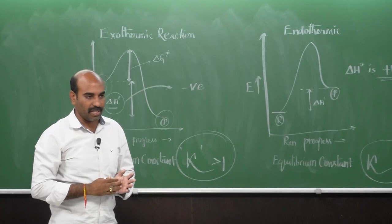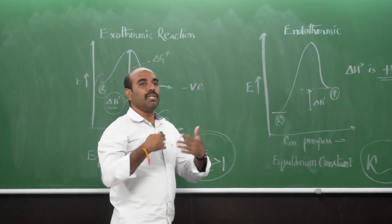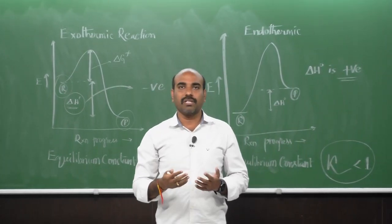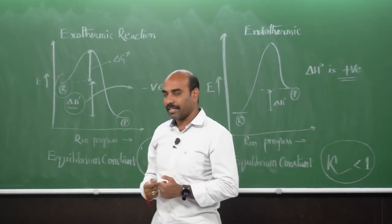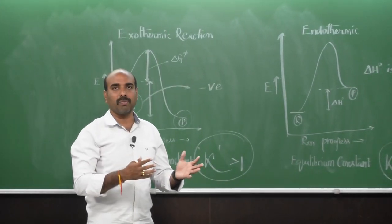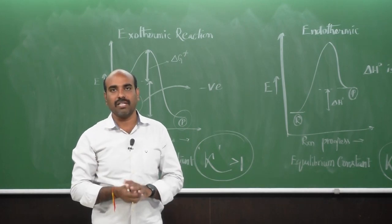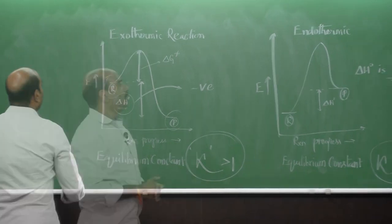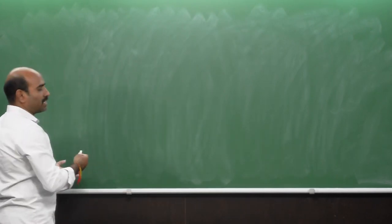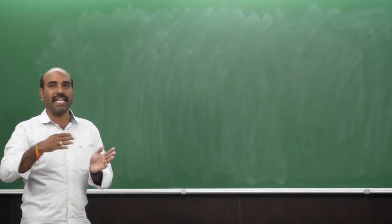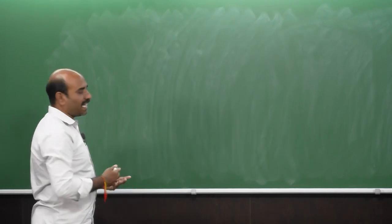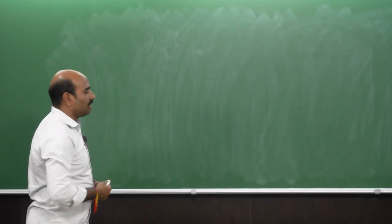We have discussed general organic reactions as background for understanding pericyclic reactions — a special type of organic reaction. In general reactions, bond breaking generates reactive intermediates like radicals or ionic species. Pericyclic reactions, by contrast, show fundamentally different chemistry in organic molecules.